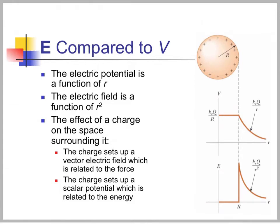Comparing electric field to potential for a charged conductor: the electric potential is a function of r, while the electric field is a function of r squared. The charge sets up the vector electric field related to force, and a scalar potential related to energy. The electric field is zero inside and goes like kQ over r squared outside. Since the electric field equals dV/dx — the slope of potential — if E is zero, the potential is not changing, giving constant potential inside the conductor.